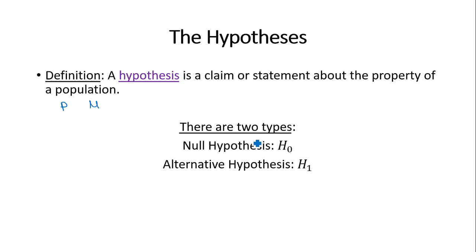There are two types of hypotheses: first, the null hypothesis, and then there is the alternative hypothesis. Every single hypothesis test will have a null and it will have an alternative.